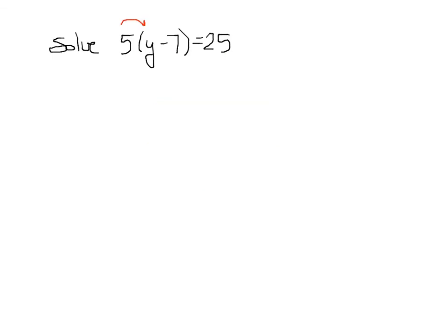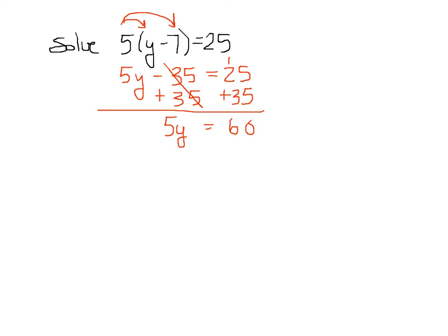Method 2, which means I'm going to distribute first. I get 5y minus 35 equals 25. Okay? I always want to isolate your variable, so I need to get the constants or the numbers on the other side of the equal sign. 5y equals 60. Divide both sides by 5.